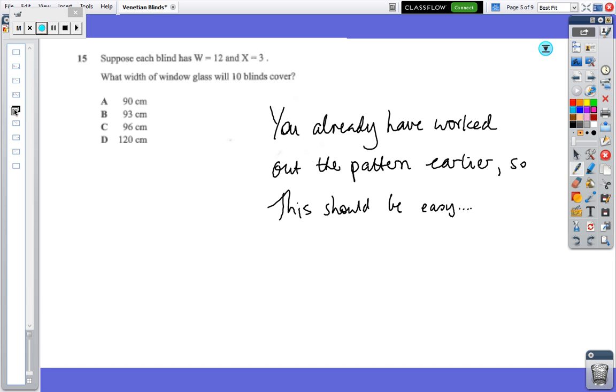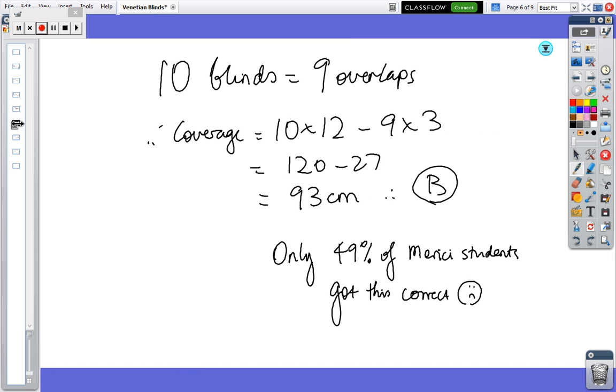Let's have a look at the next question. This one's a little bit, this one's easier. So we're looking at, again, some new numbers. So the width equals 12 and the overlap equals 3. And we've got 10 blinds. And we've already established that there's a pattern. So this one should be an easy question. So just do one for 10 blinds. Work out how many overlaps you've got, and you should be able to work this out. So I'll give you a minute and have a go.